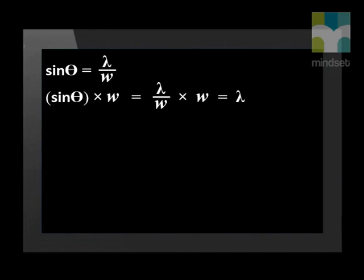We'll use the relationship that you can see here. Sine theta is lambda divided by W. If we multiply each side by W, we can cancel the W above and below, and we get a formula for lambda.